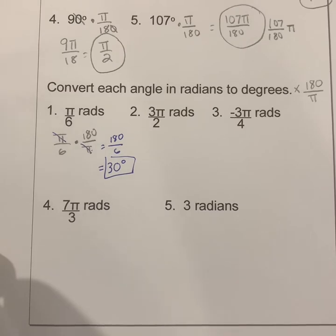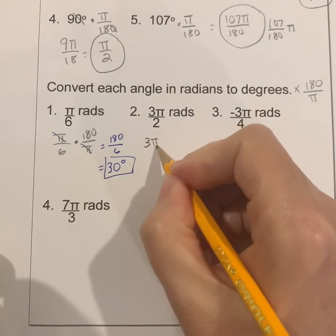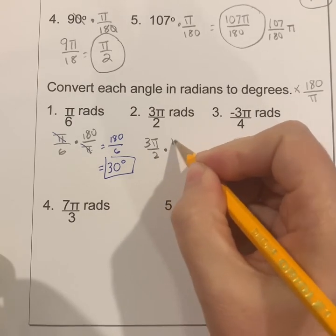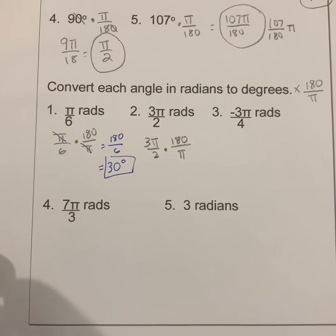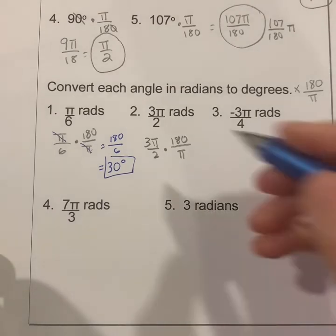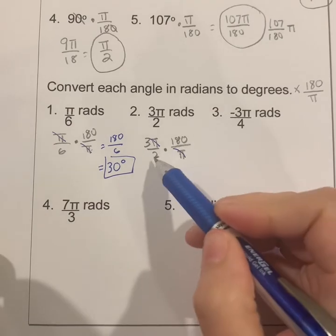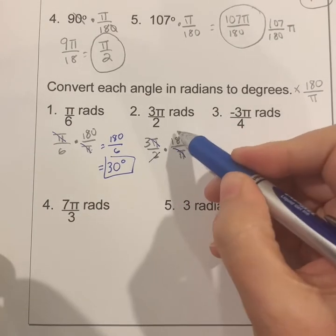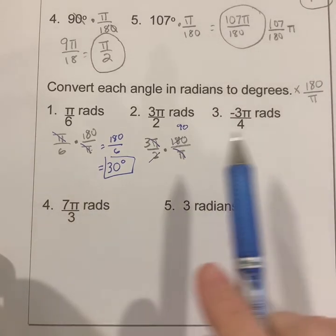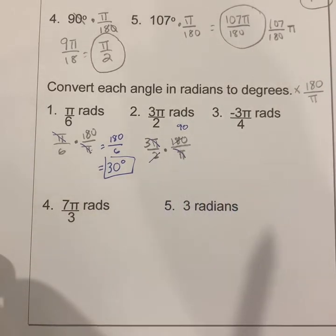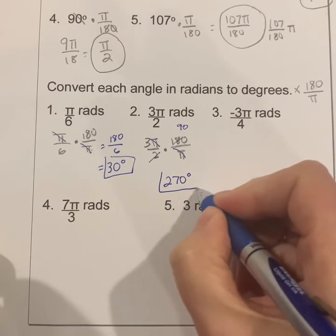For 3π over 2 radians converted to degrees: multiply 3π over 2 by 180 over π. The π's cancel, and 2 goes into 180 ninety times, so all that's left is 3 times 90, which equals 270 degrees.